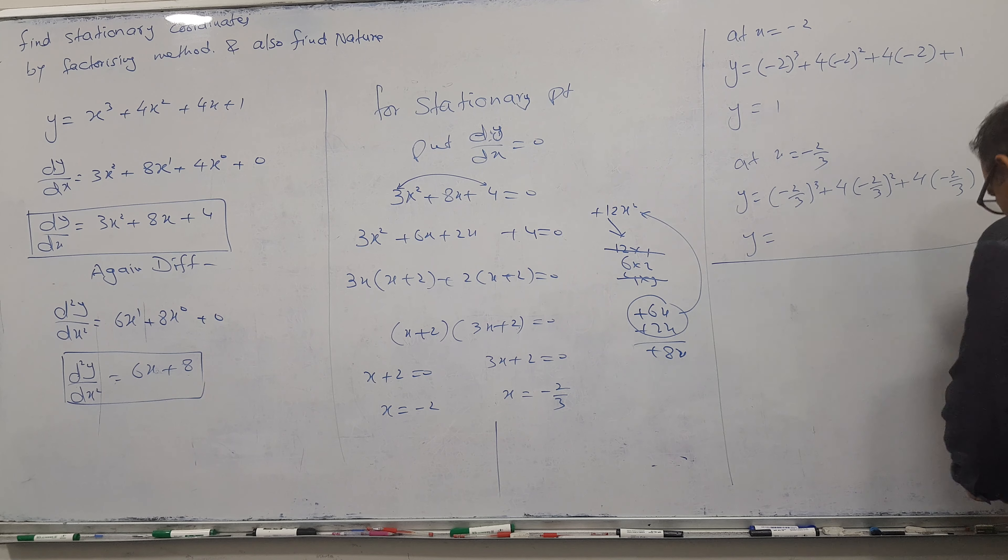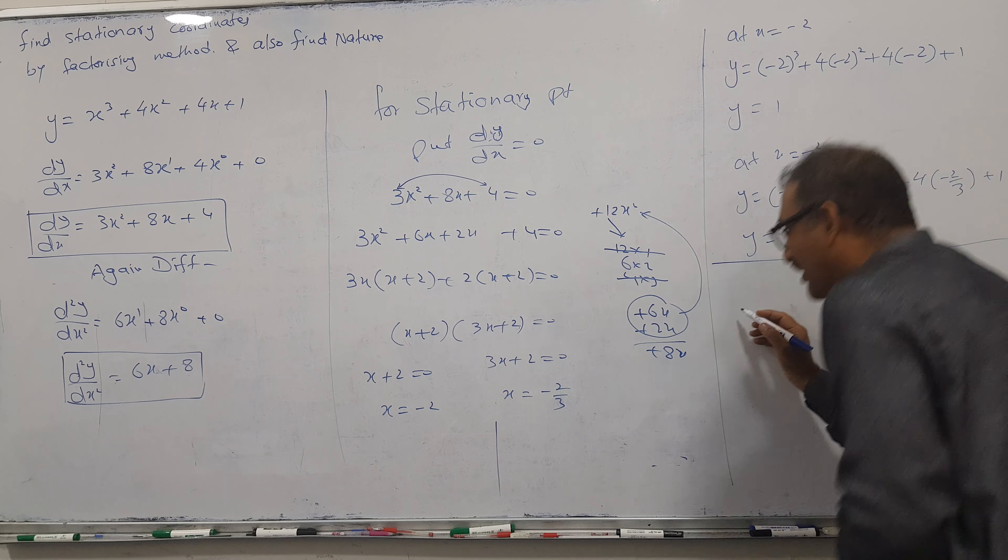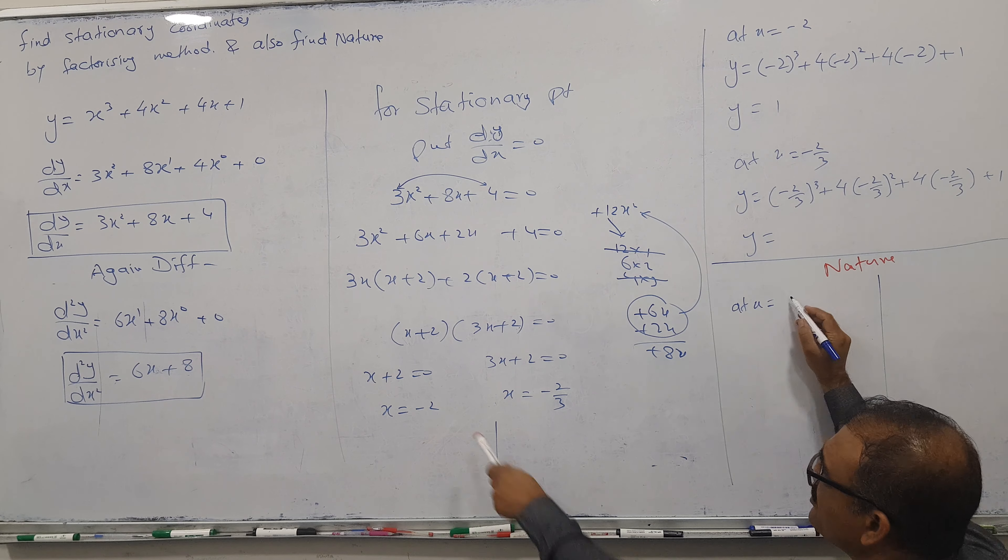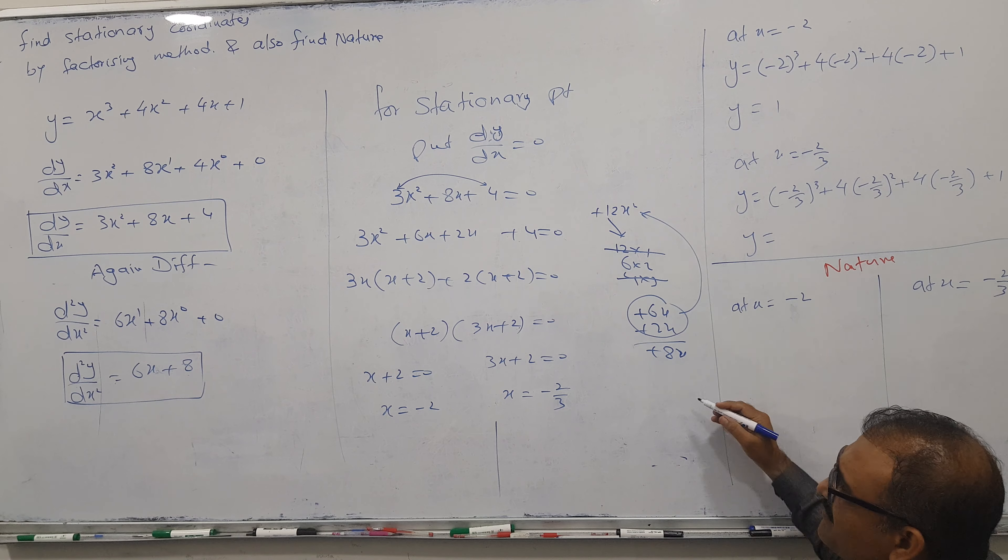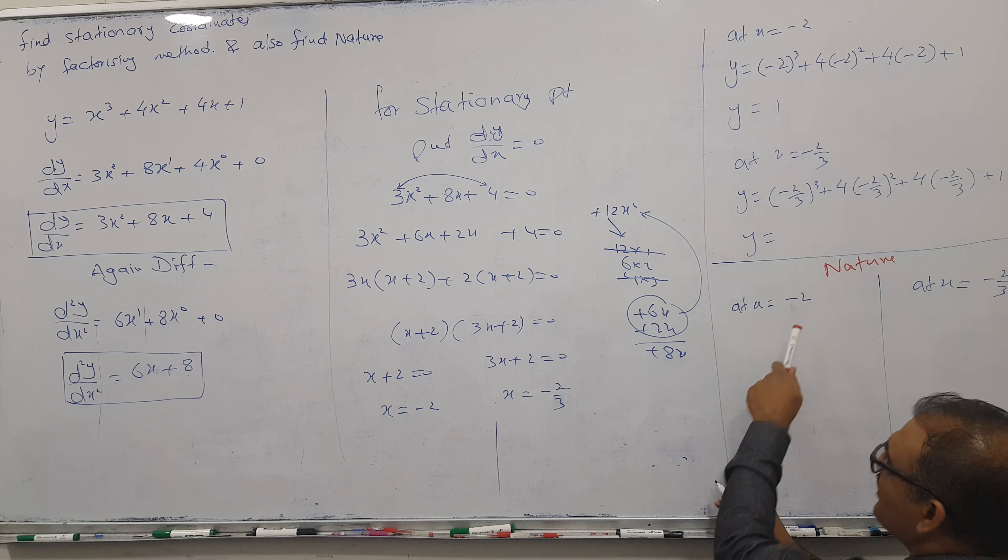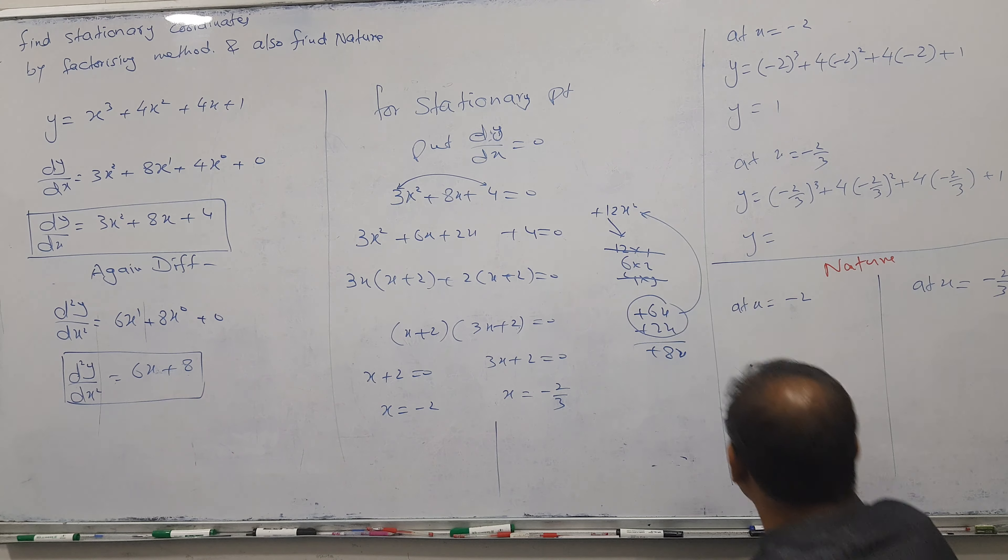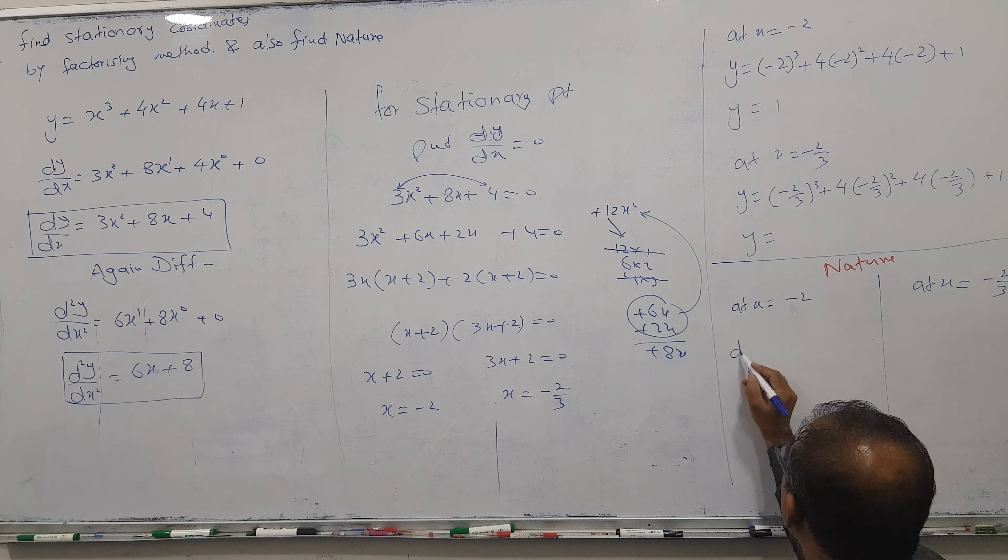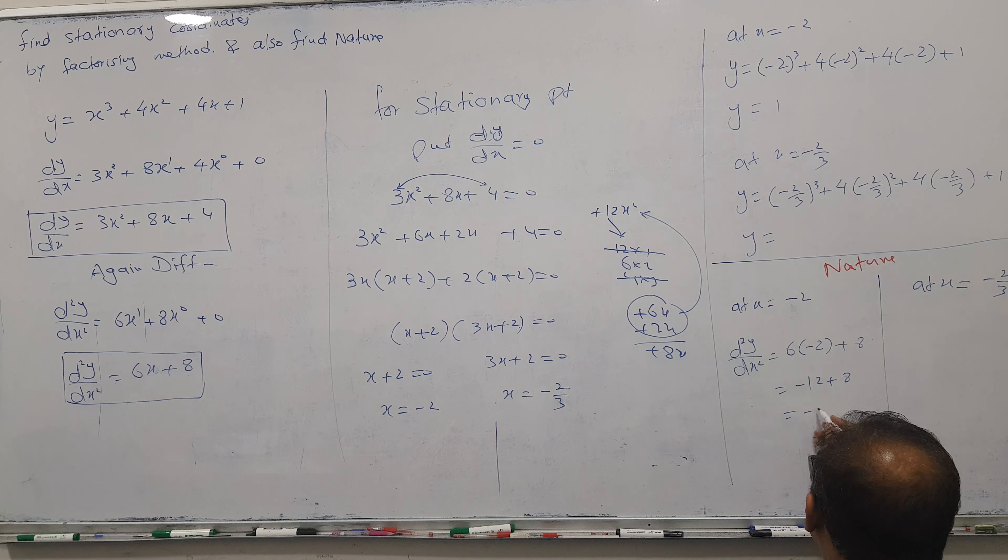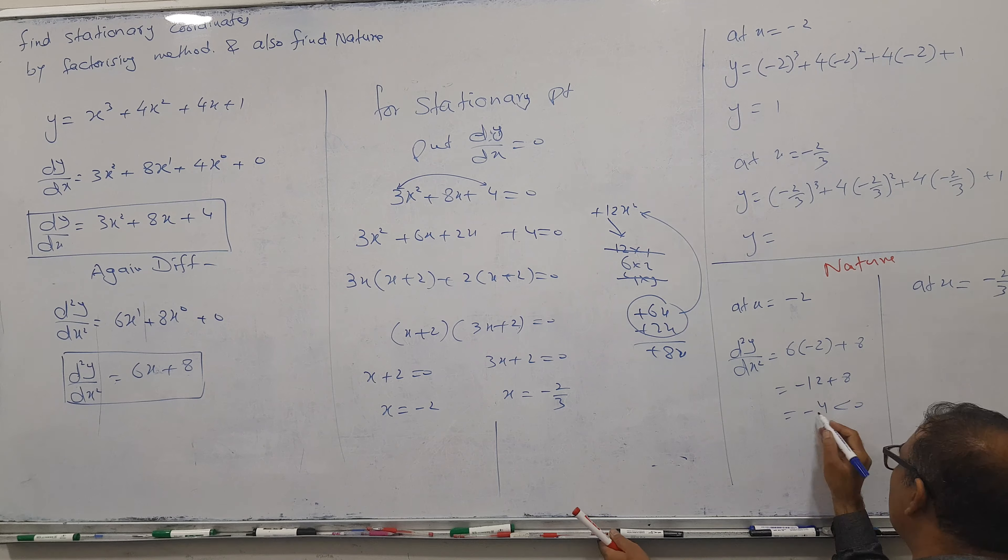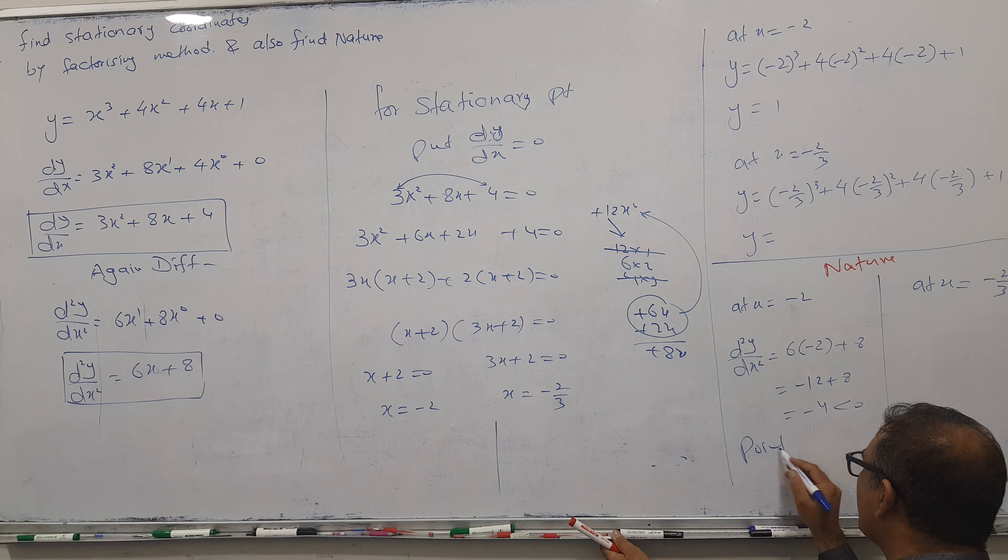Nature for both, separate one by one. At x = -2, put this in the second differentiation. d²y/dx² = 6(-2) + 8 = -12 + 8 = -4. Less than zero, negative, so this is a point of maxima.